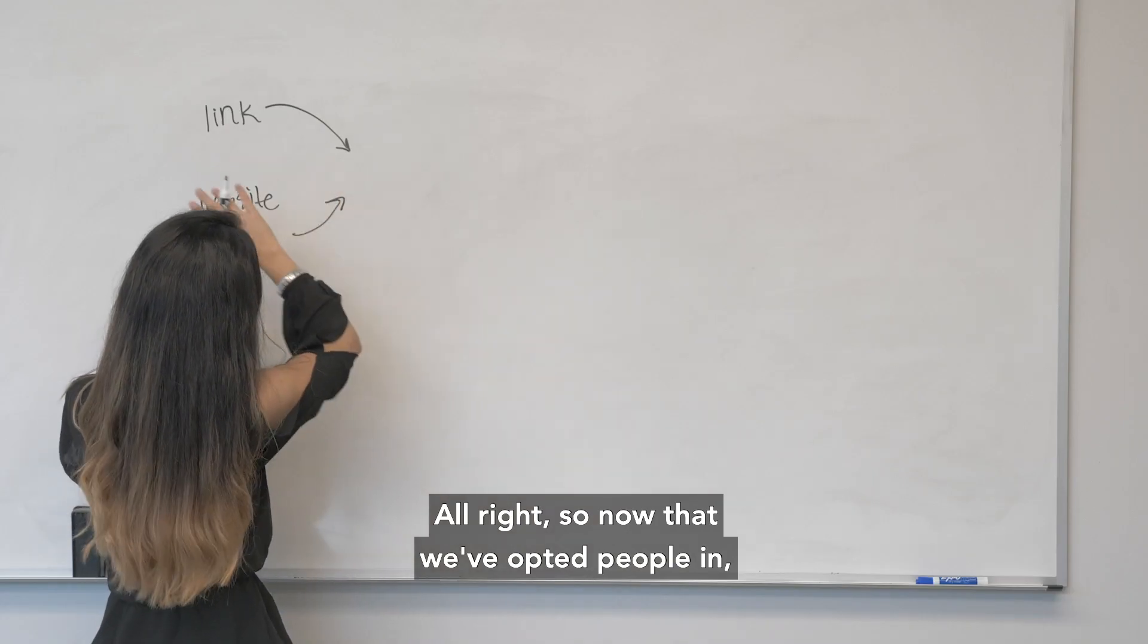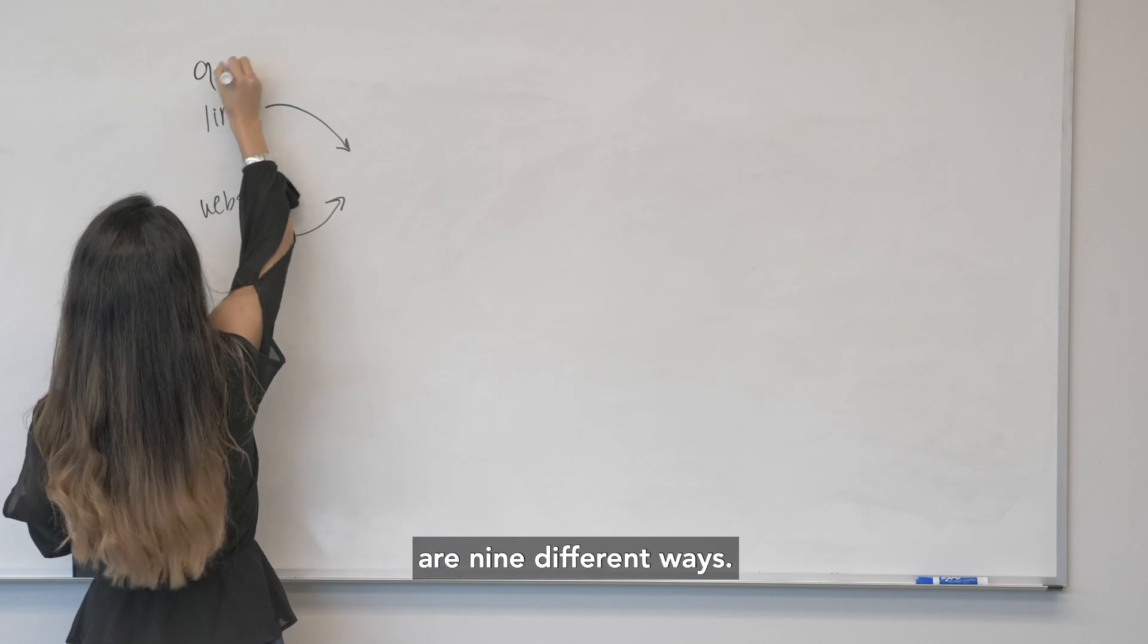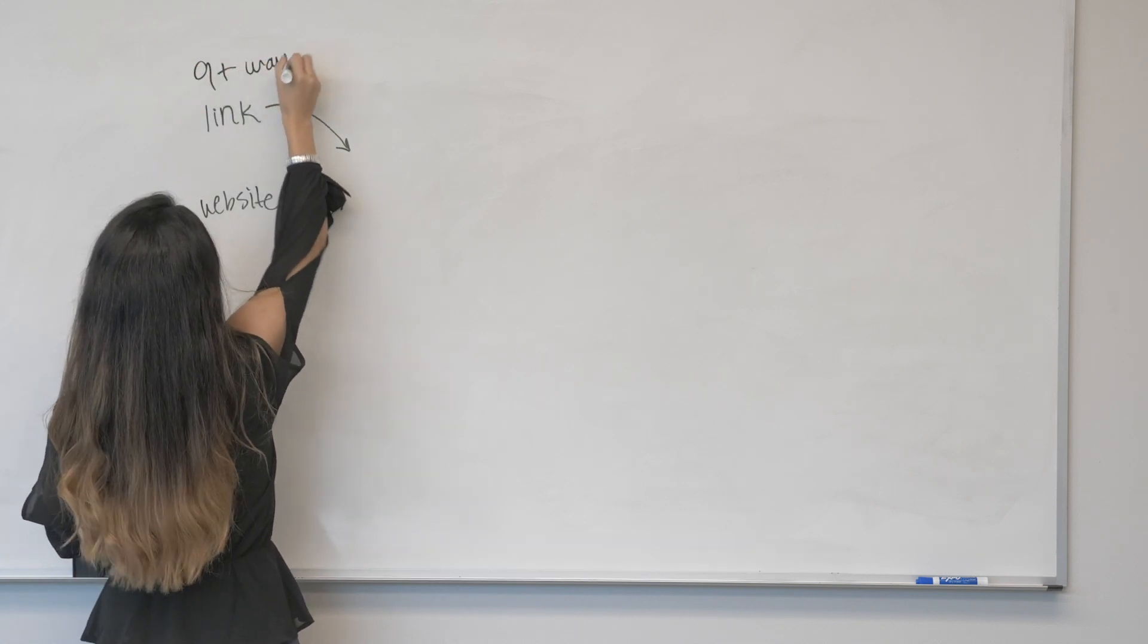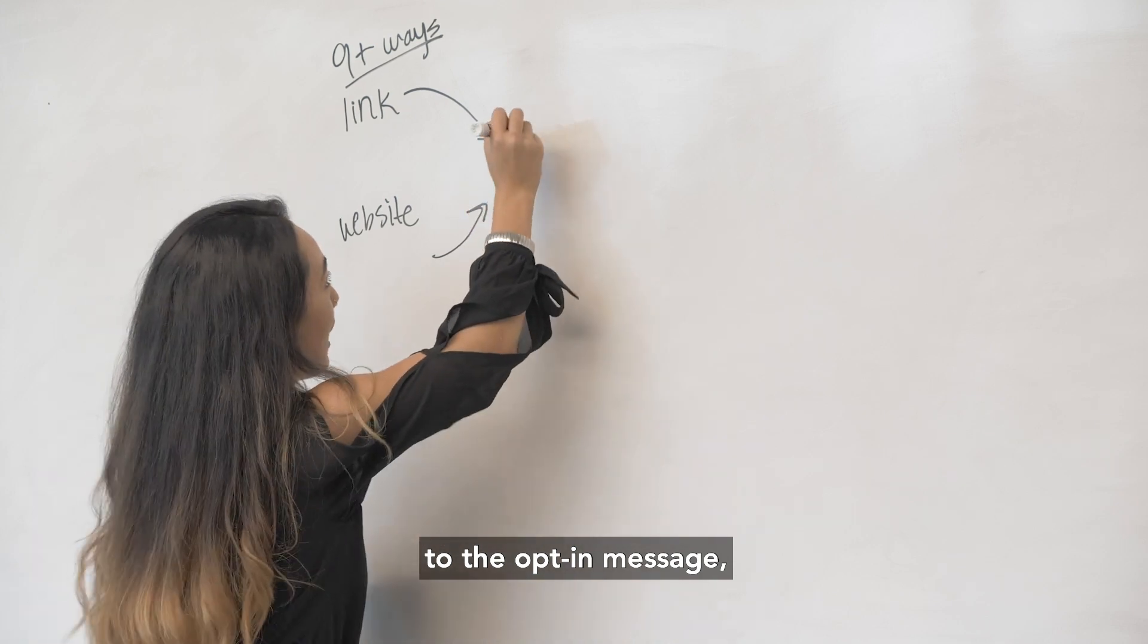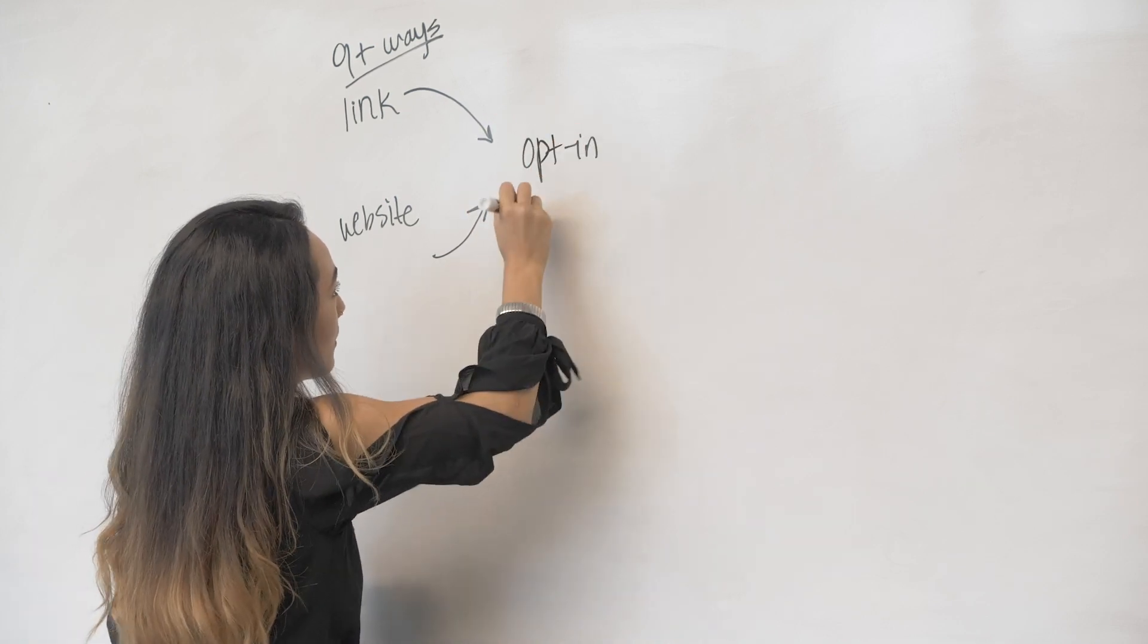All right so now that we've opted people in, I'm just going to make a note that there are nine different ways and first we're going to send people to the opt-in message which is going to be message number one.